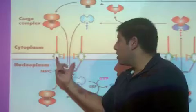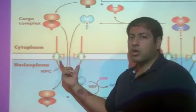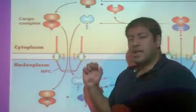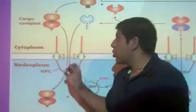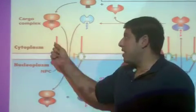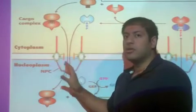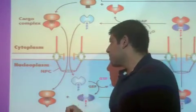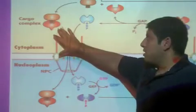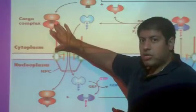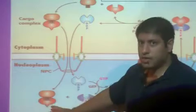Remember, the nuclear pore is this octagonal structure. And anything greater than 60 kilodaltons will require this mechanism by binding to importin in order for importin to help guide it through this nuclear pore. So, importin and the cargo protein come in together into the nucleus.